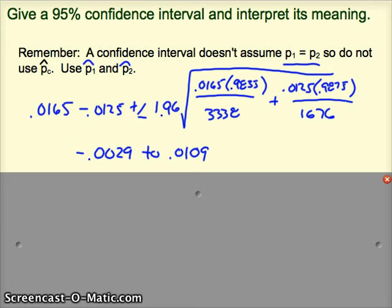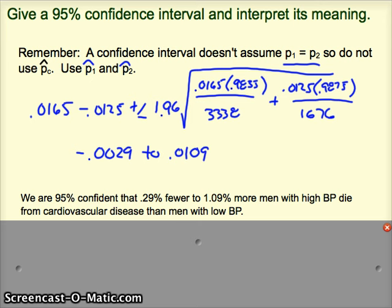We're 95% confident that, well, maybe it looks something like this. Again, I think using percentages helps us characterize things a little better than using decimals. So we're 95% confident that 0.29% fewer, again think about how we subtracted, to 1.09% more men with high blood pressure die from cardiovascular disease than men with low blood pressure. And we did this by subtracting those with low from those with high. We need to keep that in mind to properly interpret the negative and the positive here.